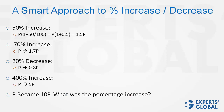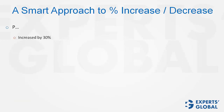p becomes 10p — what is the percentage increase? The delta, the difference is 9p, and therefore the percentage increase is 900%. Please do not commit the mistake of taking it as 1000%.